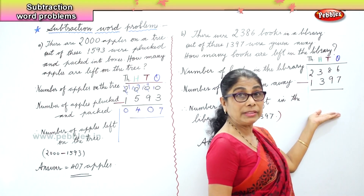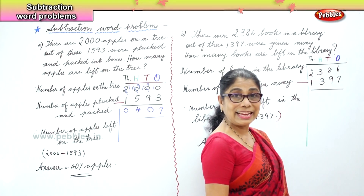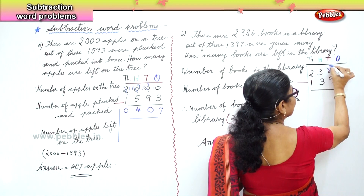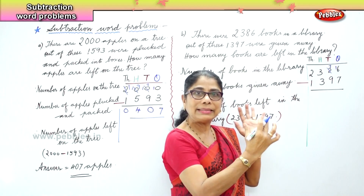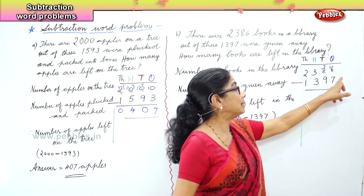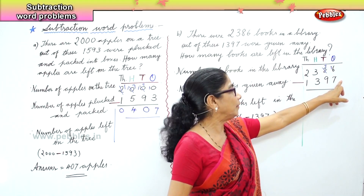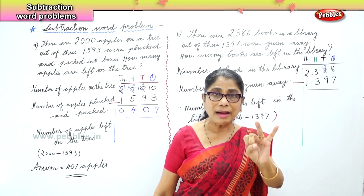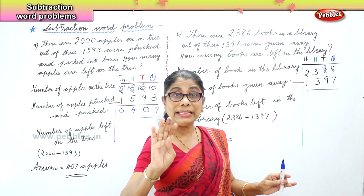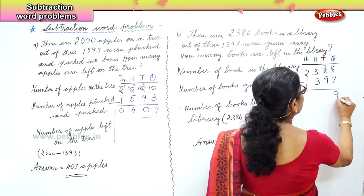First we look at the ones place. We have 6 take away 7, which is not possible because 7 is bigger. So we borrow 1 from the tens place — that is 10. We bring it over to the ones place, giving us 10 plus 6 equals 16. Sixteen take away 7: after 7 count 8, 9, 10, 11, 12, 13, 14, 15, 16 — that is 9. So 16 take away 7 is 9.